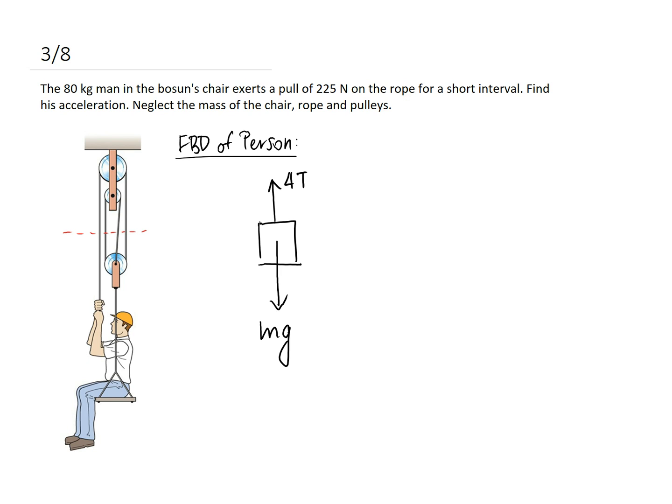Let's define a coordinate system, xy. We can say that the sum of the forces, our interest is in the y direction, is equal to m a_y. So in the y direction, we have 4T going up minus mg going down, equal to the mass of the guy times the acceleration in the y direction. We're going to assume he's only able to move up and down, so let's just call it ma.